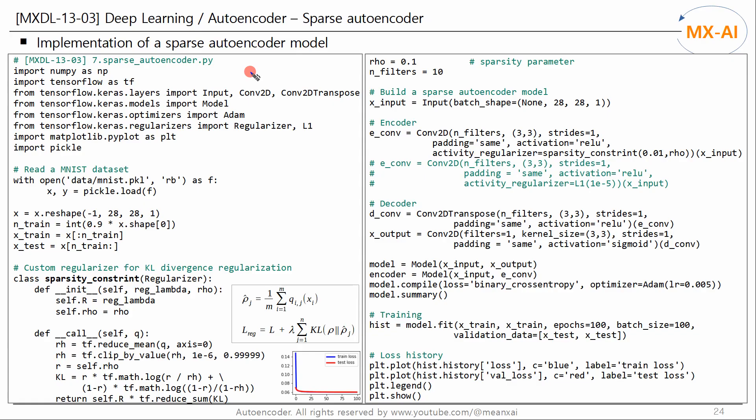Now let's implement a sparse autoencoder using KL divergence regularization. Read the MNIST dataset and split it into training and test data.